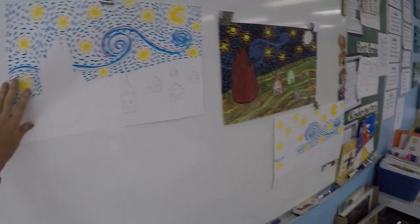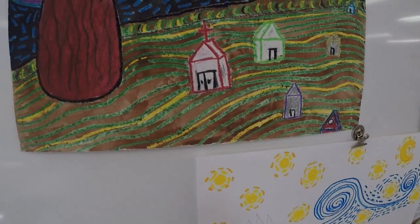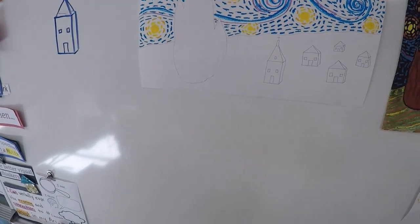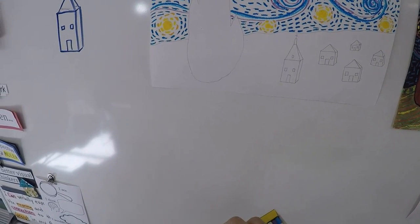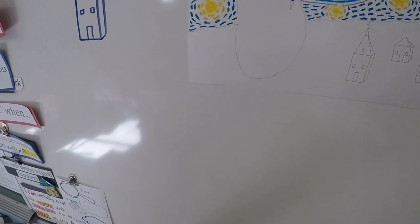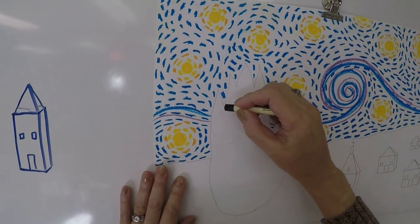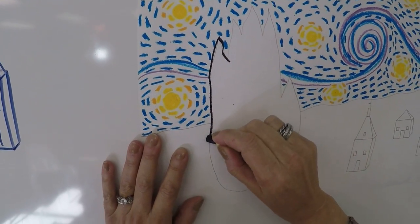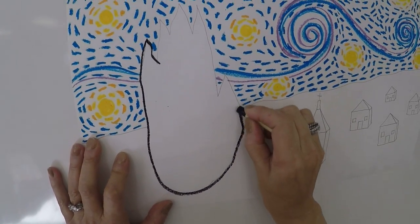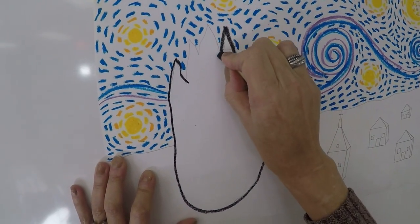Now, what I'd like for you to do is grab a black oil pastel. We're going to do black first, and I want us to outline our cypress tree. So outline that.